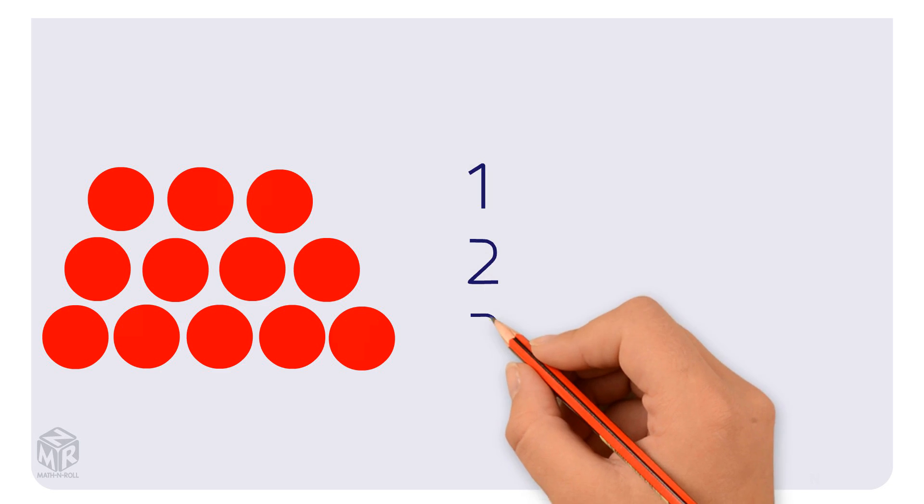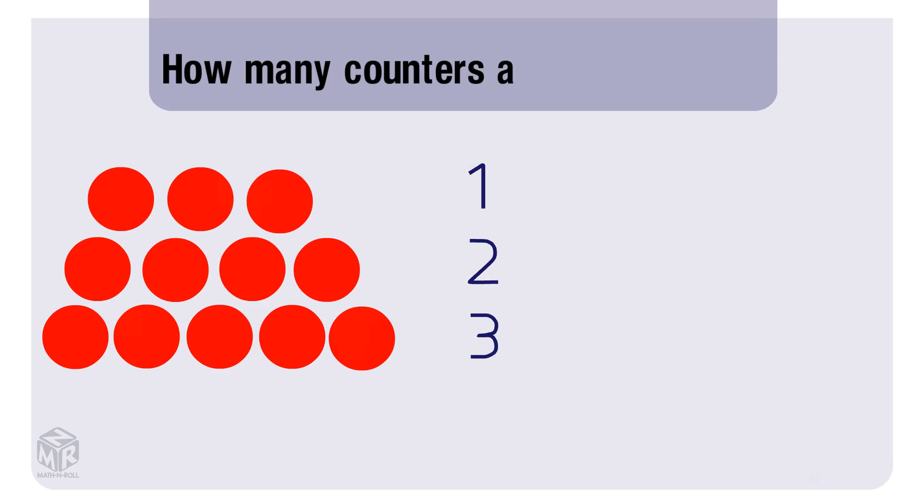Let's take a look at another example. We have 12 counters and 3 rows. We want to figure out how many counters are in each row. We add the counters one by one into each row until we run out of counters.